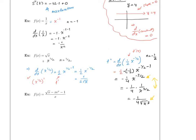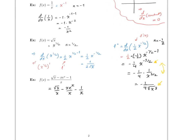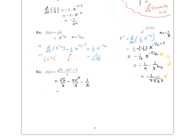The next example has three terms so you can simplify into three different parts. This will be the square root of x over x, minus x times e to the x over x, minus 1 over x. Notice this is the same as 1 over the square root of x, minus e to the x, minus 1 over e to the x. Rewriting this: x to the negative 1/2, minus e to the x, minus x to the negative 1.